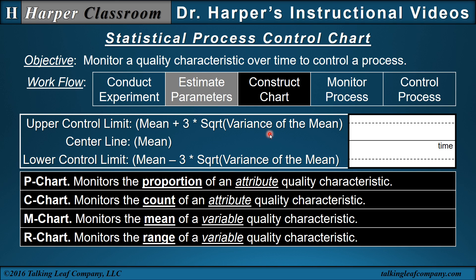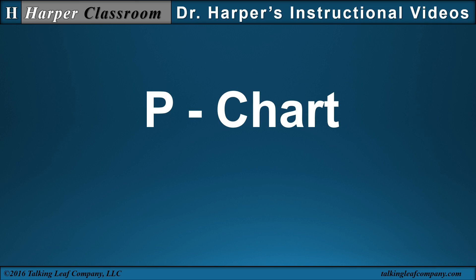The four charts we will look at are: the P-chart, which monitors the proportion of an attribute quality characteristic; the C-chart, which monitors the count of an attribute quality characteristic; the M-chart, which monitors the mean of a variable quality characteristic; and the R-chart, which monitors the range of a variable quality characteristic. Now let's look at the P-chart.